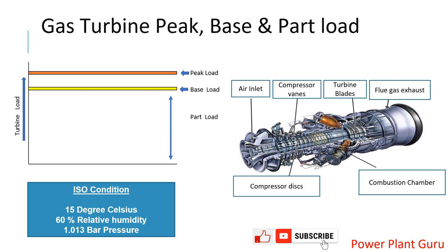Let's take the example of a GE Frame 9 gas turbine. Suppose you are operating this machine in summer conditions where the ambient temperature is around 35 to 40 degrees Celsius, and operating at full load you are getting 100 megawatt only. With the same machine under winter conditions at around 10 degrees Celsius, you are getting a full load of 130 megawatt.